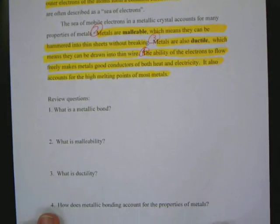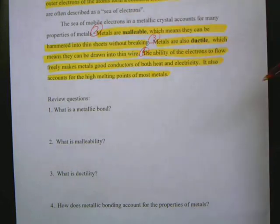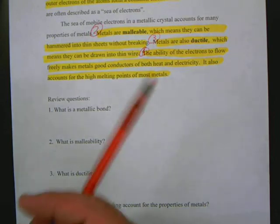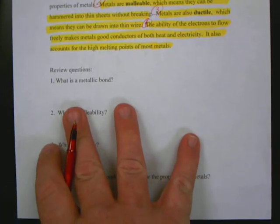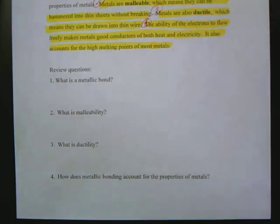Next question was, what is malleability? Malleability means that metals are malleable. Number two is right here, which means that you can hammer those into thin sheets without breaking. Ductility, number three, is right here, which means that they can be drawn into thin wire. And then number four is these last two sentences, how does the metallic bonding account for properties of metals? The ability of electrons to flow freely makes good conductors of both heat and electricity. It also accounts for the high melting points of most metals.